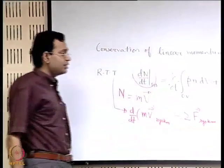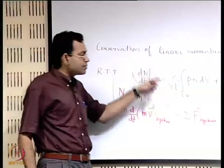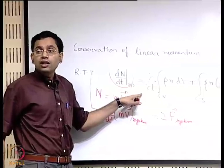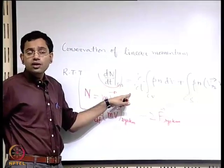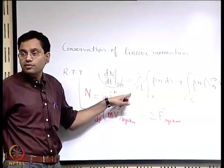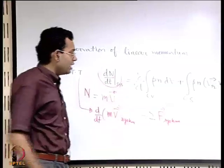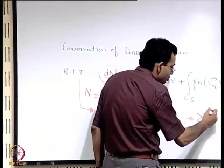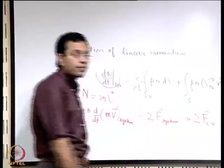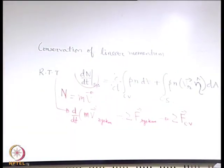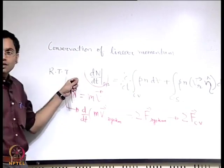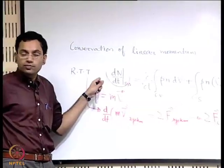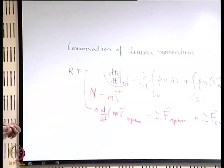We have to keep in mind that we have derived this expression with a limit as delta t tends to 0. In the limit as delta t tends to 0, the system tends to the control volume. Therefore, in that limit, this also tends to the resultant force acting on the control volume. So the left hand side essentially becomes the resultant force acting on the control volume.